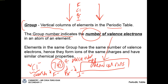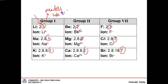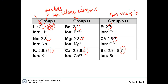Group 1 elements have 1 valence electron, group 2 have 2, group 7 have 7. For group 1, which are metals, they lose their 1 valence electron during a chemical reaction. Group 2 metals also lose valence electrons. Why? Because it is easier to lose 1 than to gain 7 to form the stable noble gas configuration. Group 7 are non-metals with a greater tendency to gain valence electrons to form the stable noble gas configuration, because it is easier to gain 1 than to lose 7.